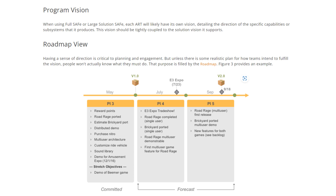When using Full SAFe or Large Solution SAFe, each ART will likely have its own vision, detailing the direction of the specific capabilities or subsystems that it produces. This vision should be tightly coupled to the solution vision that it supports.